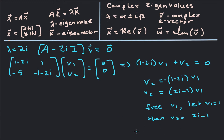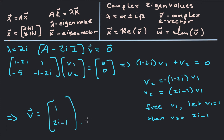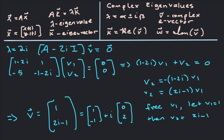So our eigenvector v equals [1; 2i−1]. Now it's important to break this out into its real and imaginary parts. The real part is [1; −1], and then i times the imaginary part: the imaginary part of the first entry is 0, and the imaginary part of the second entry is 2. So K = [1; −1] and W = [0; 2].